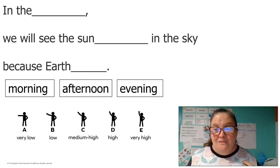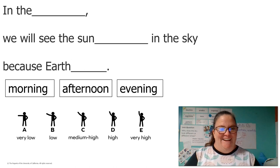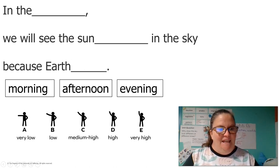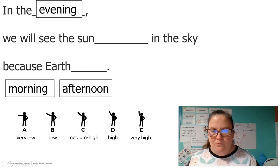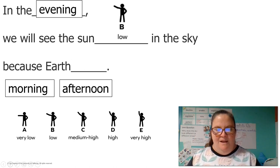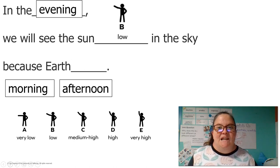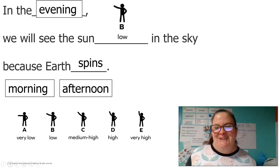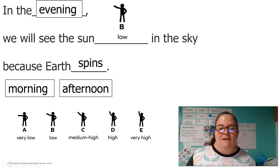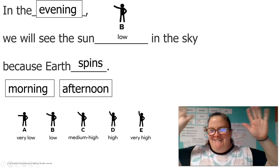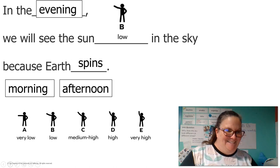One more — let's do the evening. This is our last one. Right before we go to bed, we will see the sun — very low, low, medium high, high, or very high? I said low. You might have said very low too and that's okay. "In the evening, we will see the sun low in the sky because Earth spins." Let's read the whole thing together: "In the evening, we will see the sun low in the sky because Earth spins." Nice work, you guys. Take care and I'll see you next time. Bye.